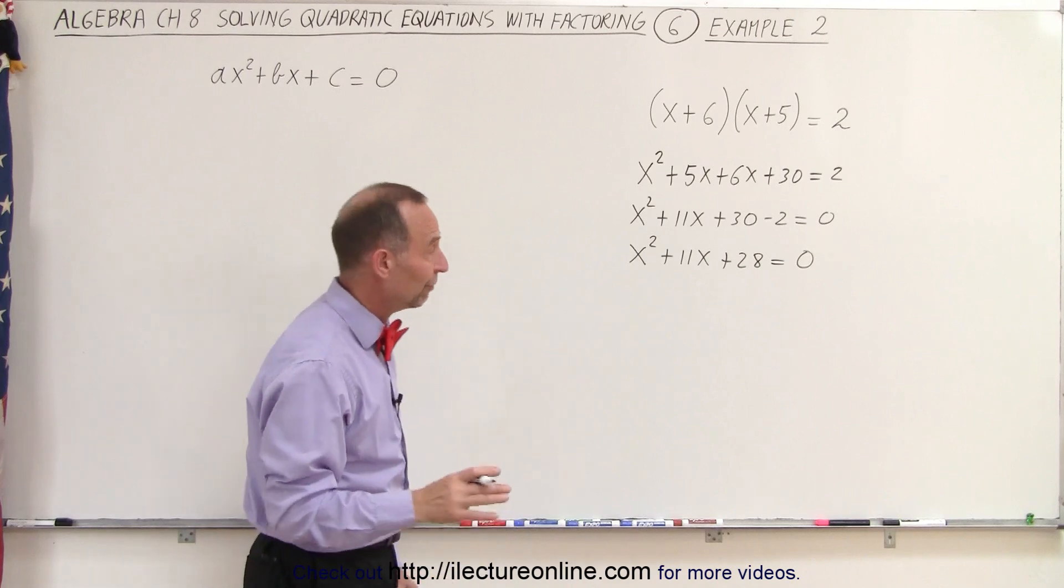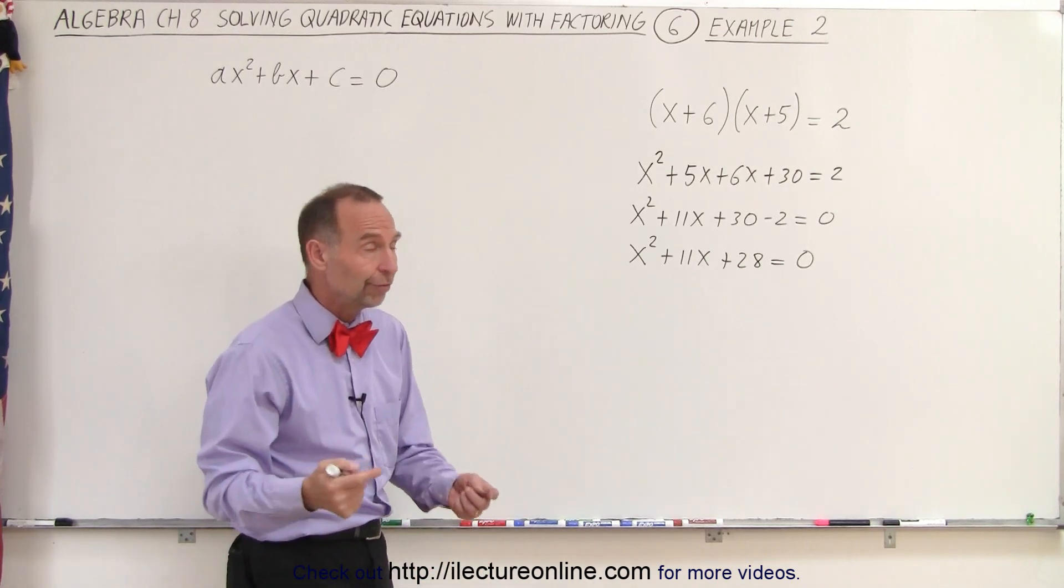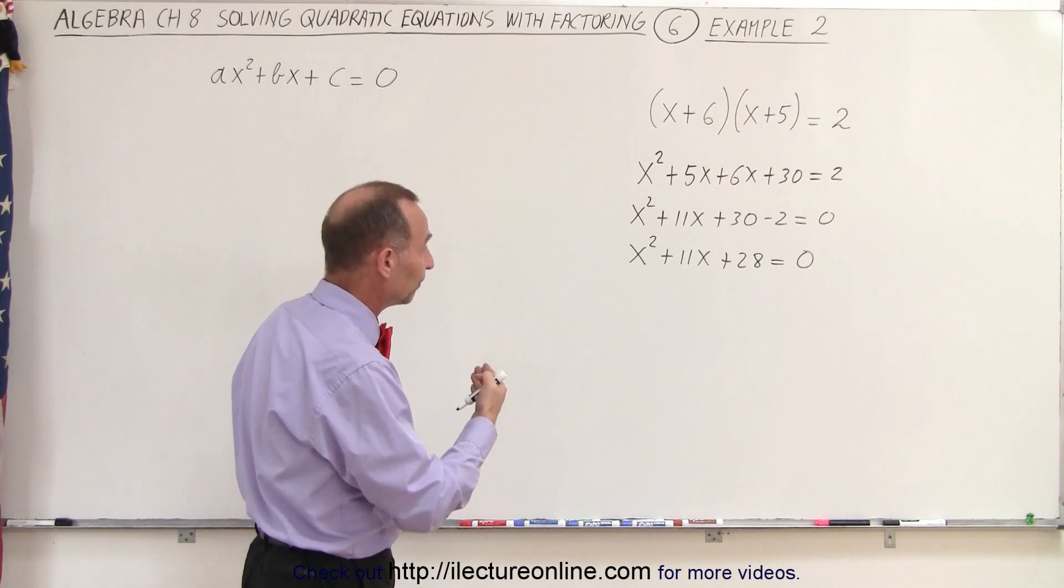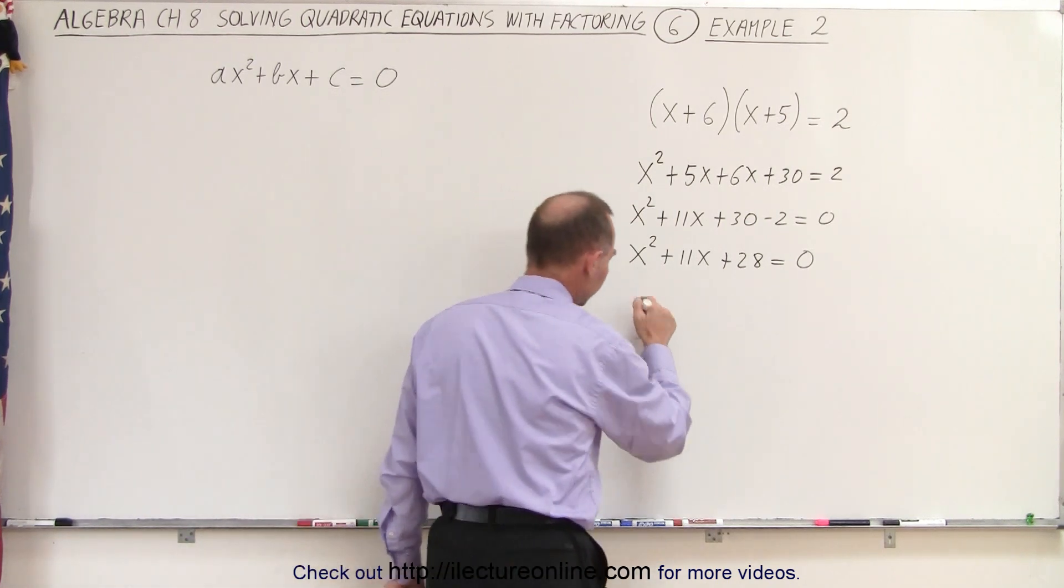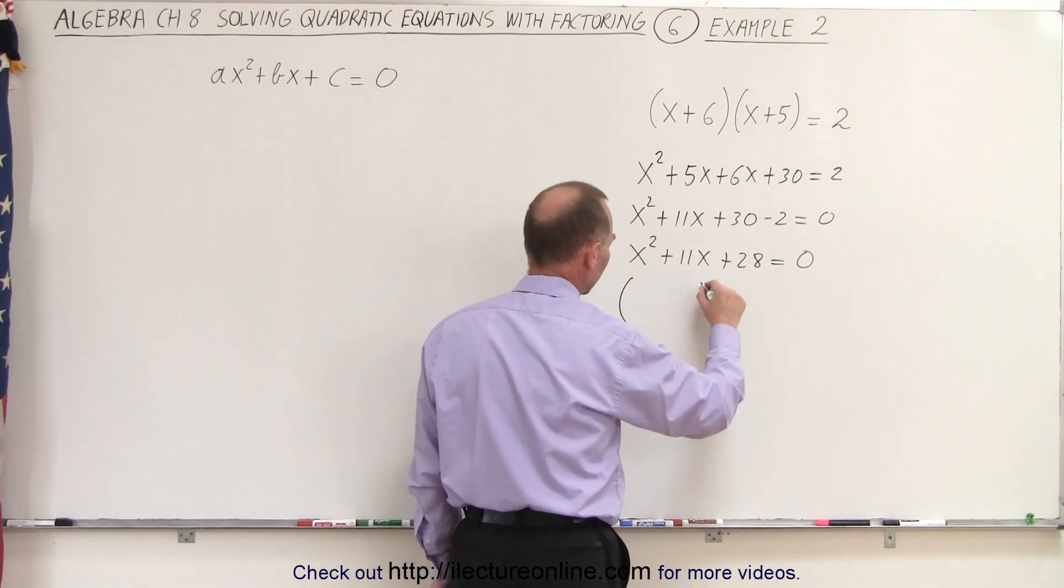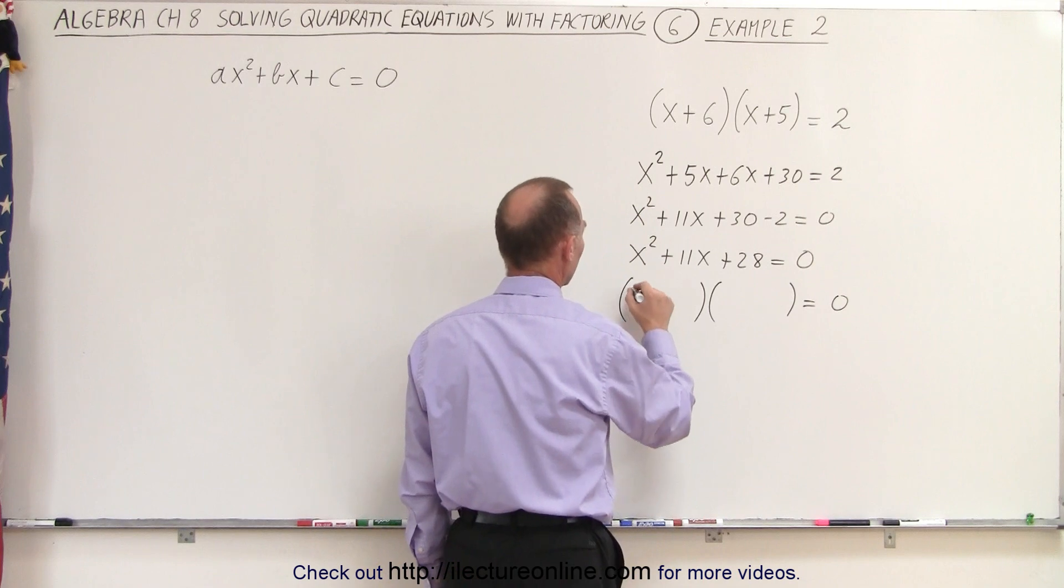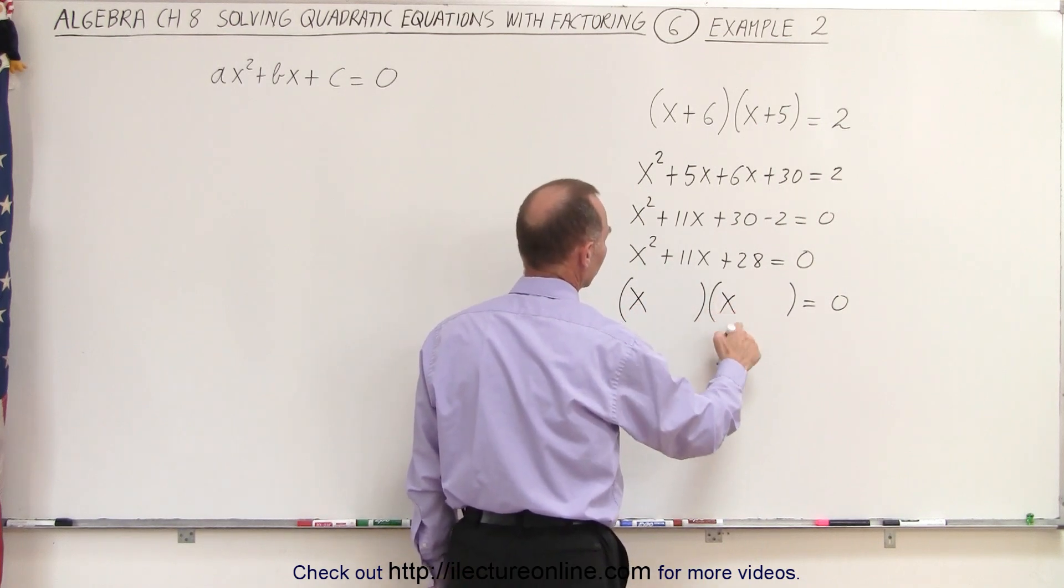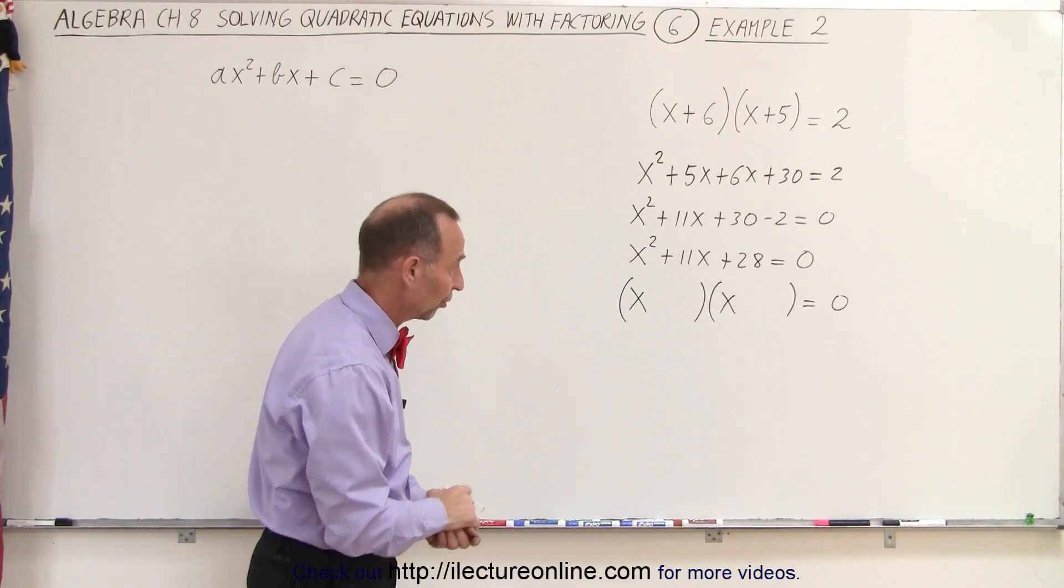And now we're ready to factor it so we can solve for the quadratic equation. In other words, solve for the two values of x where the parabola would then cross the x-axis. So here, this can now be written as the product of two binomials equals 0. We can see that we need an x here and an x here because x times x is x squared. Notice the coefficient in front of the x squared term is just a 1.